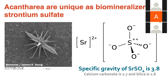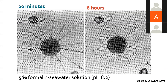These skeletons can also be problematic if you're trying to study acantharians, because strontium sulfate skeletons dissolve in many common fixatives used with plankton samples. For example, this acantharian shown on the left was collected and then after six hours in a 5% formalin seawater solution, the spines had almost completely dissolved. Almost all acantharians dissolve in 12 to 24 hours in 5% formalin. As a result, early plankton surveys underestimated the abundance of acantharians by an order of magnitude.